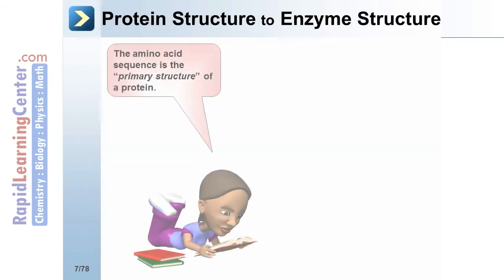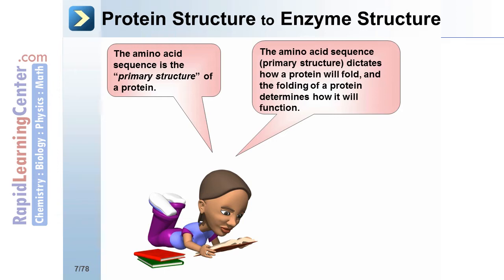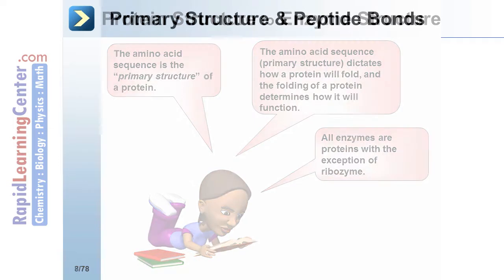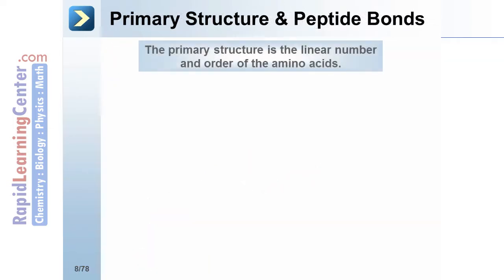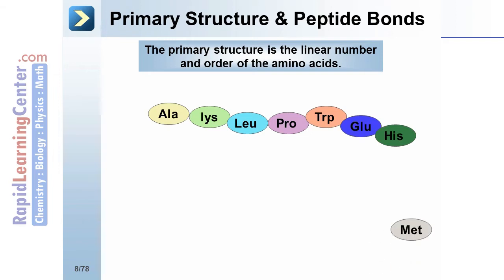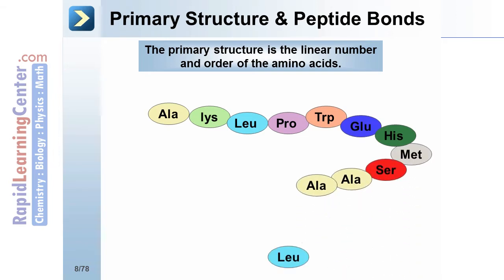Protein structure and enzyme structure: The amino acid sequence is the primary structure of a protein. The amino acid sequence — the primary structure — dictates how a protein will fold, and the folding of a protein determines how it will function. All enzymes are proteins, with the exception of a ribozyme. The primary structure is the linear number and order of the amino acids in a protein. Amino acids are linked via a peptide bond to form a protein or polypeptide chain. The formation of the peptide bond releases water, because peptide bond formation is a dehydration reaction.